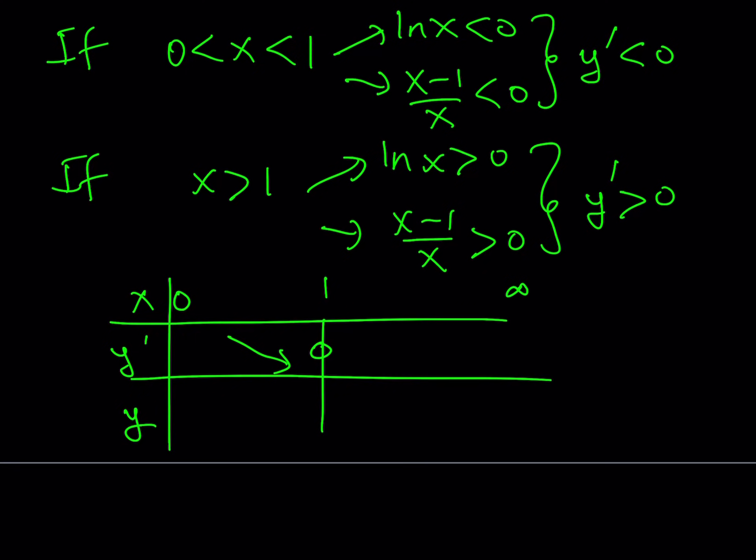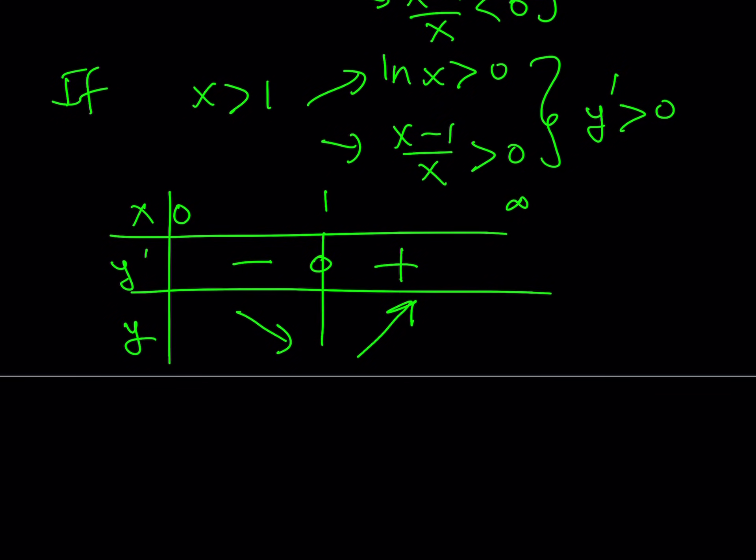So if x is between 0 and 1, then our function has a negative derivative. Otherwise, it has a positive derivative. This means that our function is actually, I was probably supposed to write it the other way around. So we have a negative derivative here and a positive derivative, which indicates that our function is decreasing and then increasing, which means that we have a minimum at x equals 1.